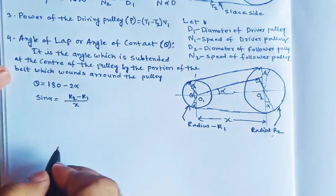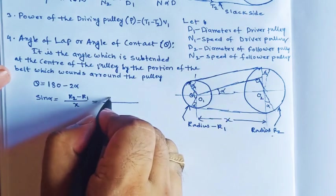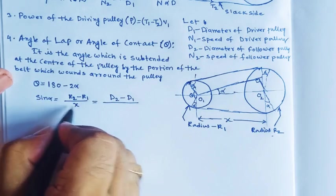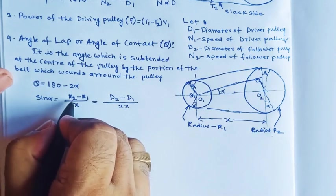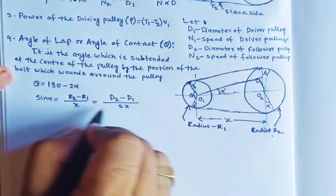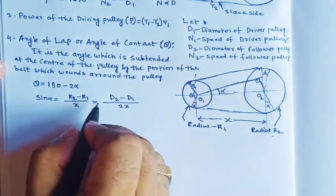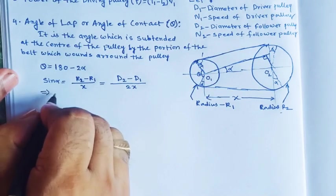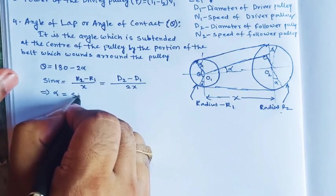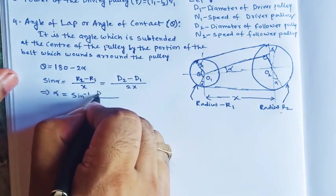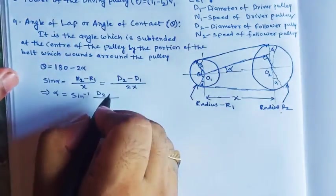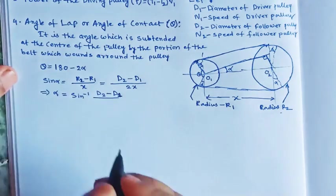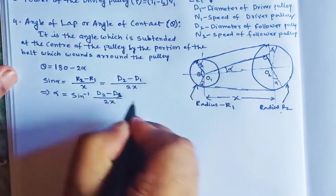So I can write: sine alpha equals (D2 minus D1) divided by 2X, having converted radii to diameters. Therefore, alpha equals sine inverse of (D2 minus D1) / (2X), where D2 is the larger follower pulley diameter and D1 is the smaller driver pulley diameter.